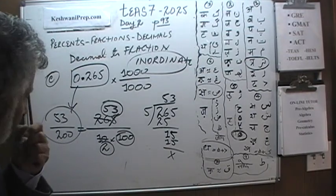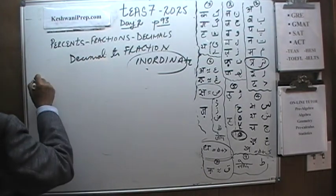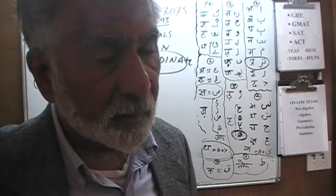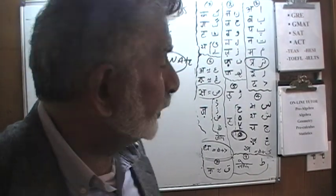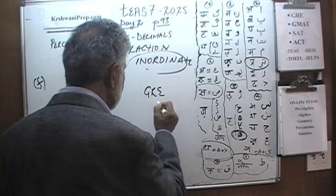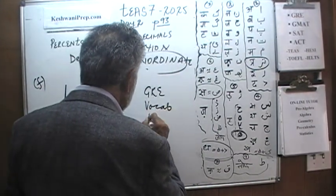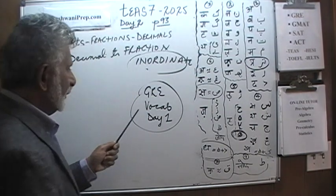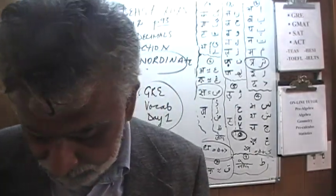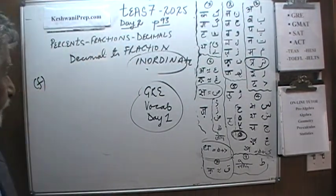That was part E. Now part F. I know you are here for the math part, but if you are interested in improving your vocabulary, we just used the word 'inordinate.' Search for GRE vocabulary day one along with my name Keshwani — the video will pop right up. Watch that series; I believe there are a hundred of them. Watch as many as you can.